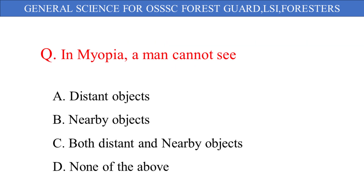In myopia, a man cannot see: A. Distant objects, B. Nearby objects, C. Both distant and nearby objects, D. None of the above. And the correct answer is option A: Distant objects.